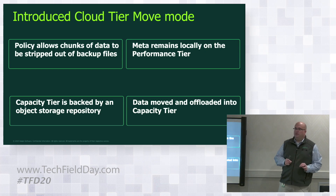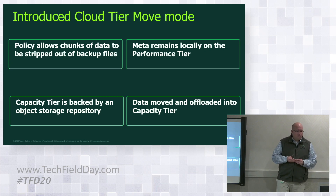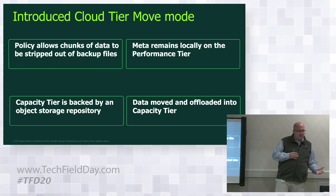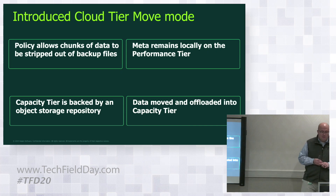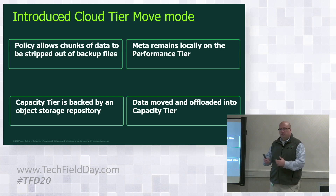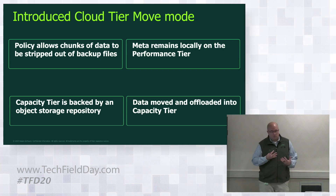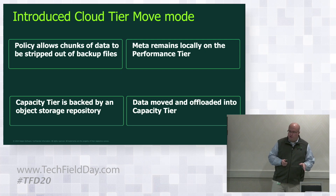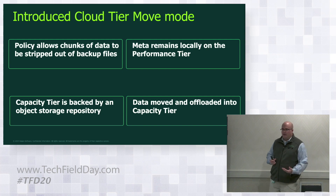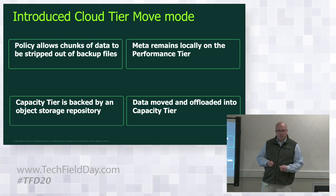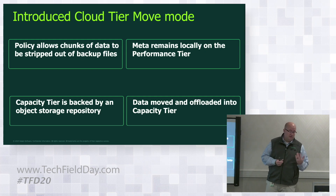The thought is I can take the scale-out backup repository construct and back it into the cloud — make it effectively infinite. Those three extents might fill up, but I want to put data that's outside of my normal restore windows potentially in the cloud. The policy for moving data to the cloud will actually decouple the actual backup data from the metadata, which is very interesting. The performance tier — that on-premises repository — will have very good indexing or cataloging of what is in the Veeam console. Whether data is on-premises or in the cloud, I just want to be able to restore it.